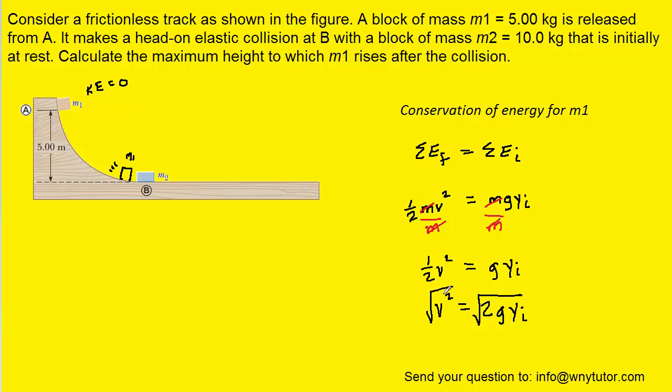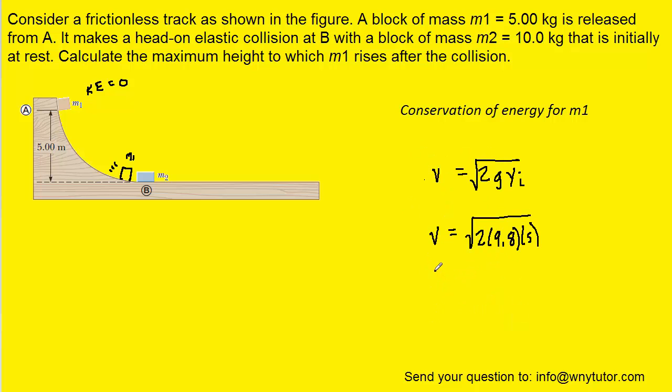And then we'll take the square root of both sides. And of course on the left side, the square root will cancel the squaring. So then we can plug in the known value of g of 9.8. And then the initial height as marked in the diagram was 5 meters. And when you punch that into your calculator, you should get approximately 9.9 meters per second.